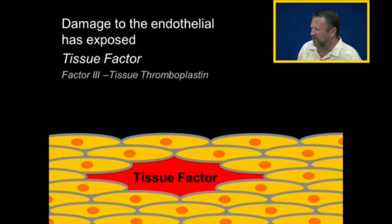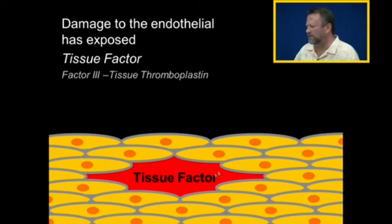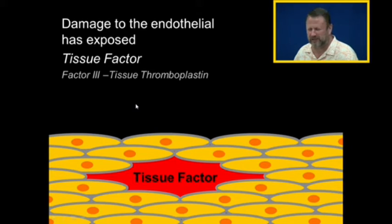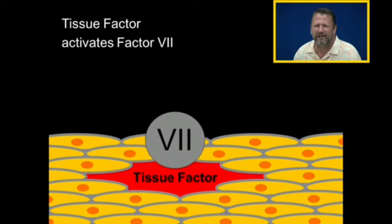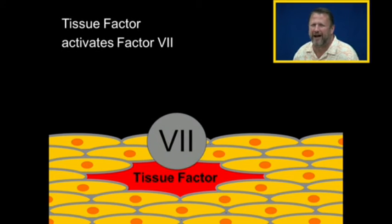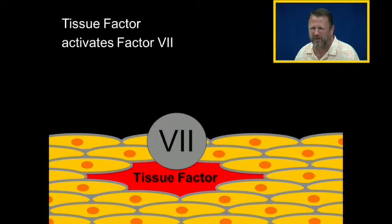Damage to the endothelium has exposed something called tissue factor, which used to be called factor three, tissue thromboplastin. Tissue factor will activate something called factor seven, the most common coagulation factor in the blood. By the way, these are made by the liver — most of them are made by the liver. They're proteins that float around in the blood.